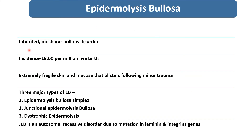In brief about epidermolysis bullosa: it is an inherited mechanobullous disorder with an incidence of 19 per million live births. Characteristically, the newborn will have extremely fragile skin and mucosa that blisters following minor trauma. There are three major types: epidermolysis bullosa simplex, junctional epidermolysis bullosa, and dystrophic epidermolysis bullosa. Our patient was having junctional epidermolysis bullosa, which is an autosomal recessive disorder due to mutation in the laminin and integrin genes.